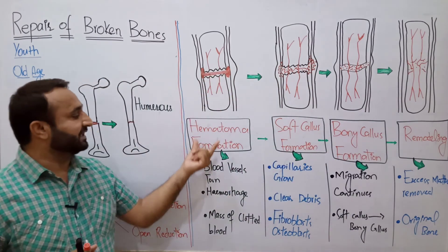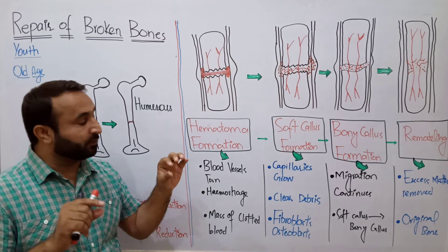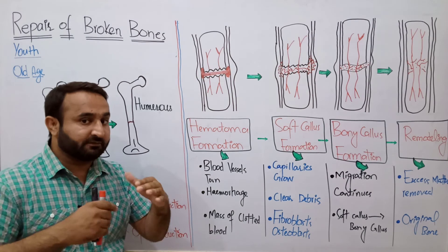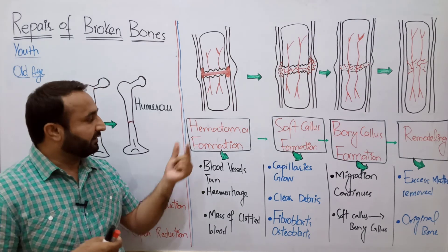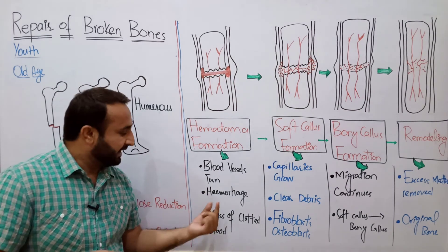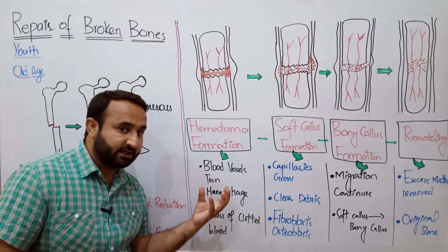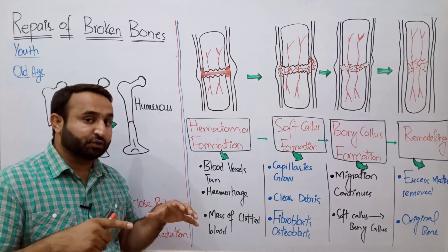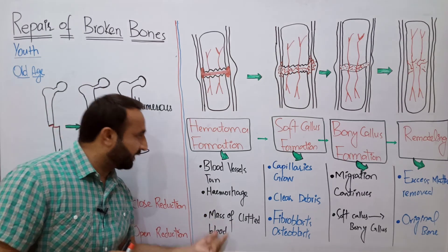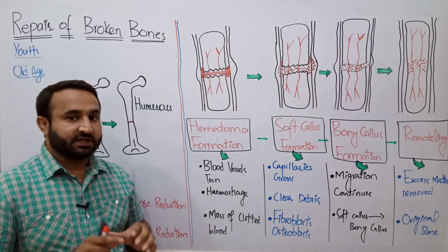Phase 1 — Hematoma Formation: When a bone breaks, the compact bone and spongy bone fracture, surrounding tissues are injured, and blood vessels inside the bone and surrounding tissues rupture and tear. Hemorrhage occurs — internal bleeding takes place. A large amount of blood accumulates there, and it begins to clot. Fibrinogen forms blood clots. The mass of clotted blood is called a hematoma. 'Hema' means blood and 'toma' means clot. So the first step of repair — hematoma formation — begins immediately after the bone breaks.